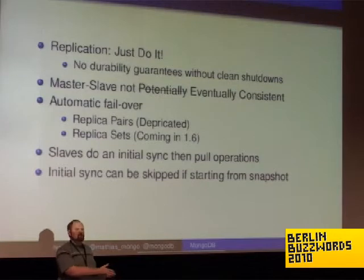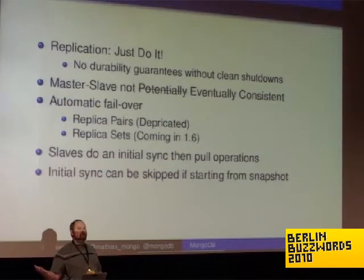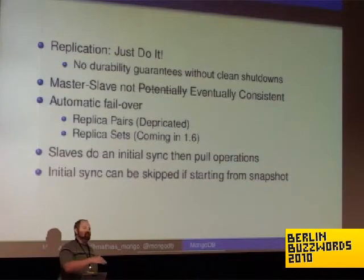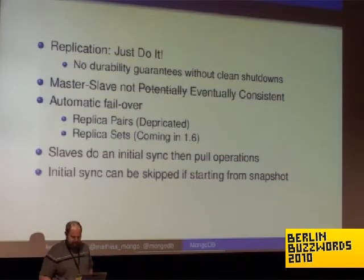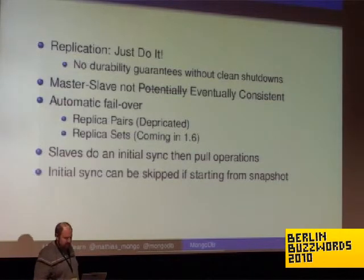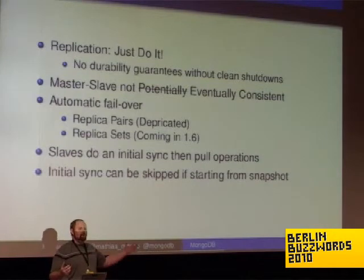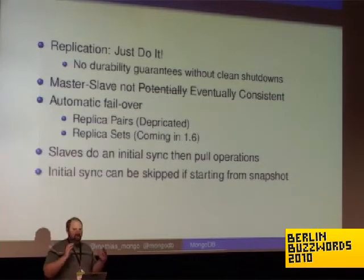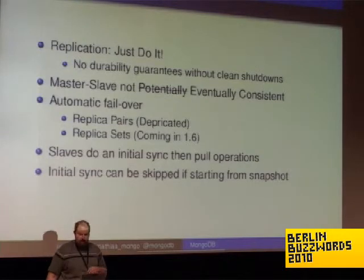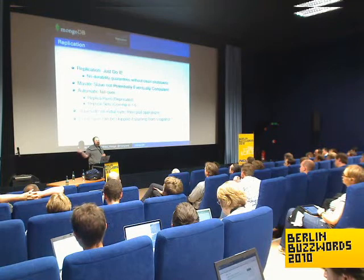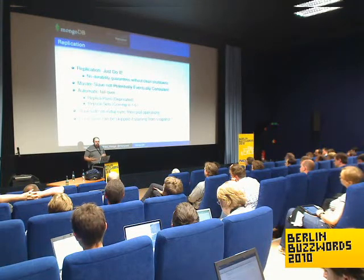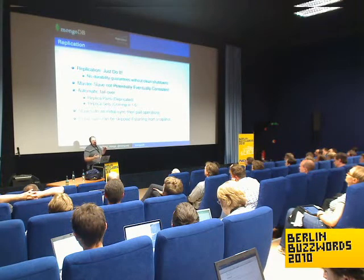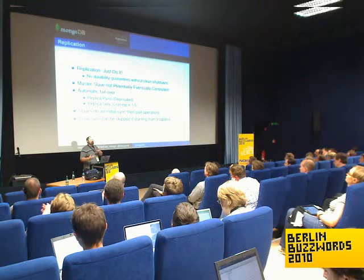If you only query a master, you're guaranteed to have the most up-to-date version of that data. If you're okay with querying slaves, you may get stale data. The way our replication works: slaves do an initial sync of all the data, then follow an operations log that the master keeps and apply all the master's operations. If you're running on EBS on EC2, you can take a snapshot of your master or slave, bring up another slave using that, and skip the initial sync — just start trailing the operations log.